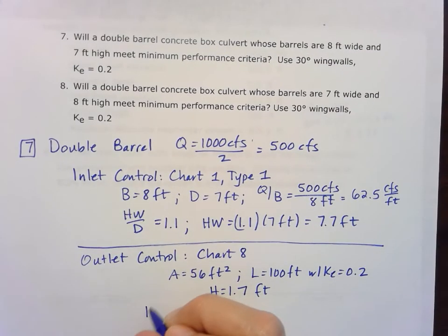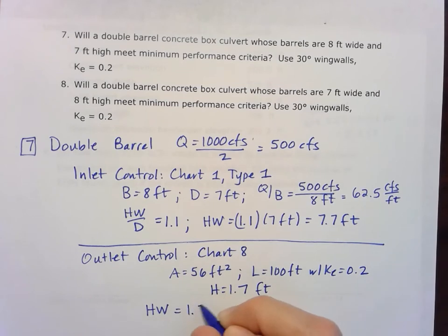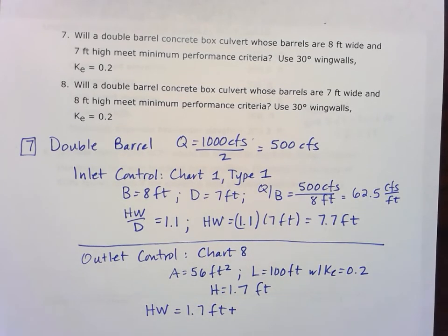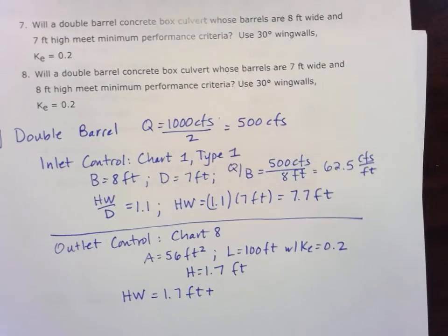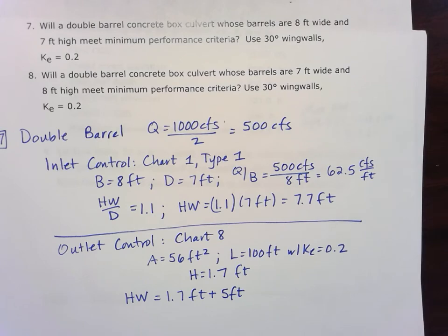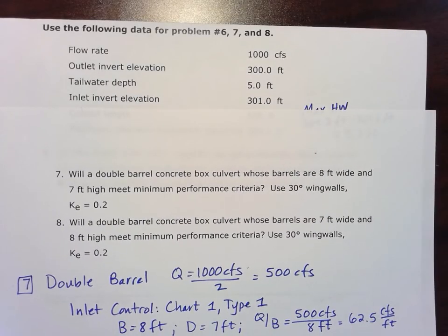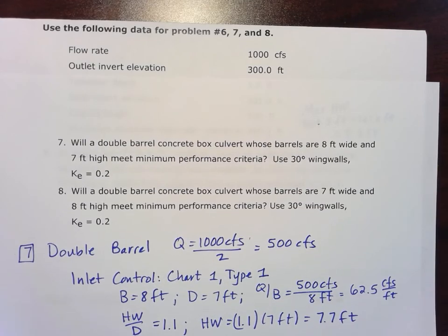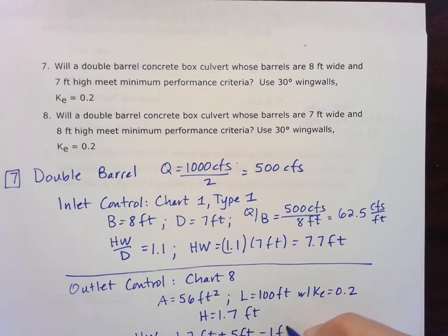So to find that headwater then for the outlet control, we take that head that we pull off the chart. We add that to the information around the tailwater depth, 5 feet, that's given to us. And then we're going to take a look at the elevation difference, which will tell us that slope times length ratio. In this case, it's 301 at the invert and 300 at the outlet. So it's just a one foot difference. And we'll subtract that difference here.